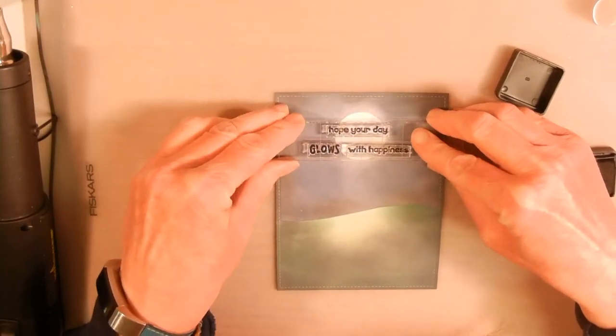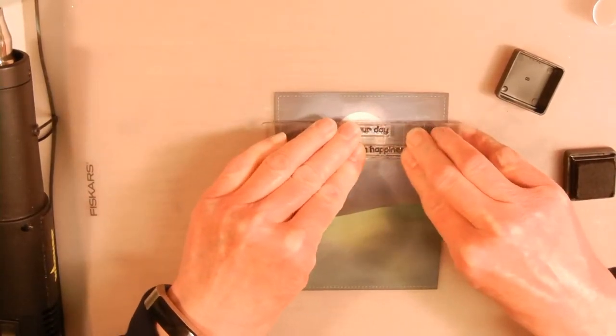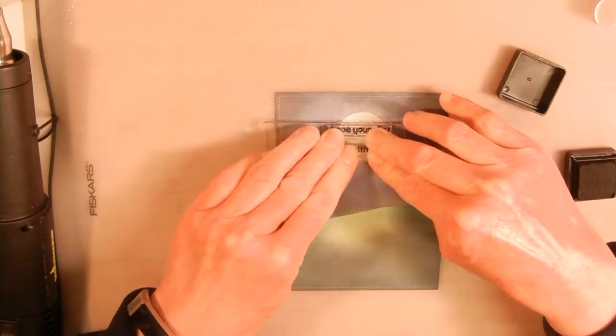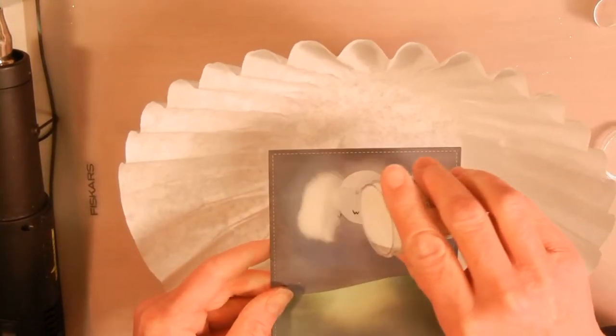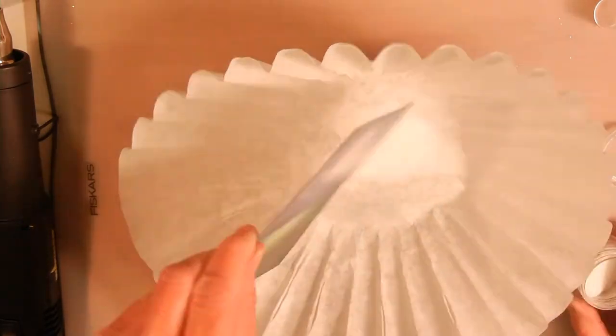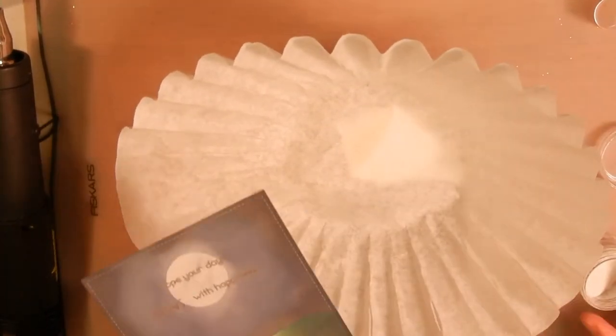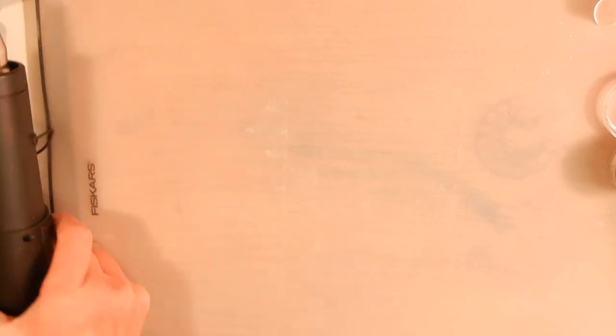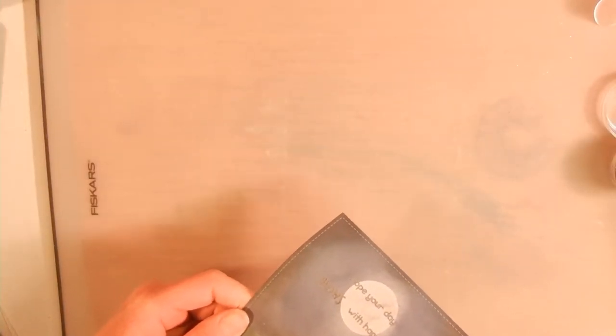Next I use Ranger clear embossing powder to go over the sentiment, and then I heat that with my Wagner heat tool and that melts the embossing powder.